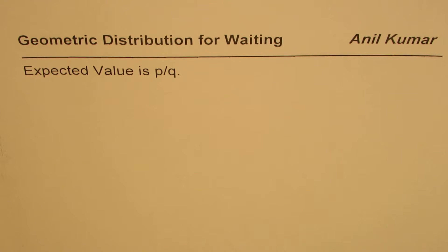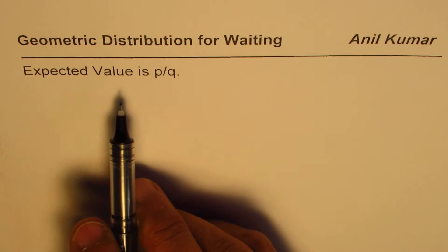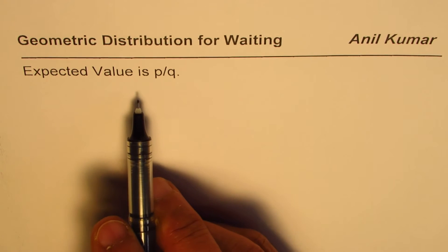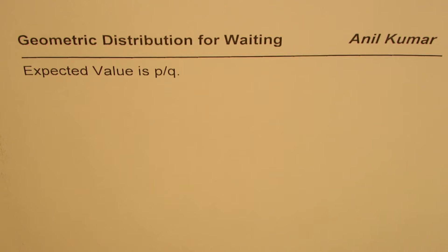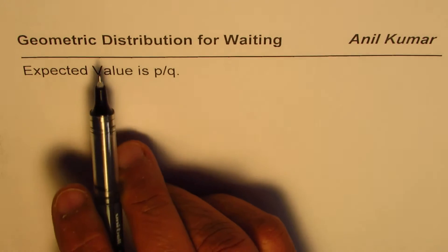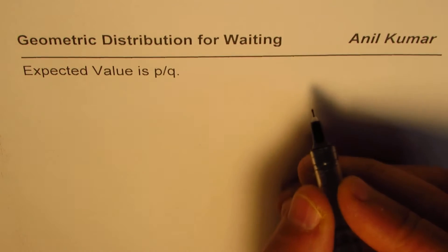I'm Adil Kumar and in this video we will understand geometric distribution for waiting, and we are going to prove that the expected value in this distribution is Q over P, where P is the probability of success and Q is 1 minus P, the probability of failure.